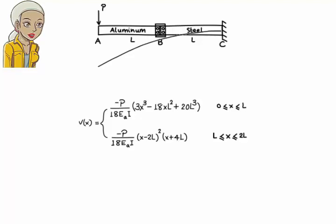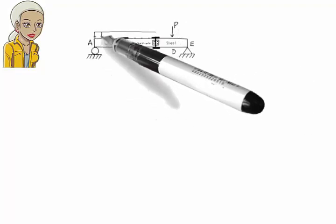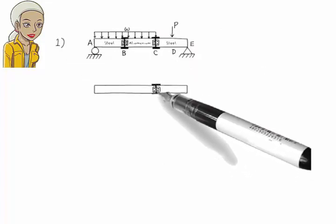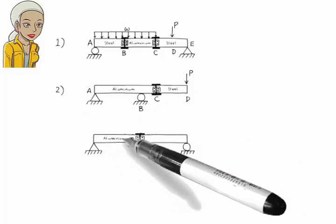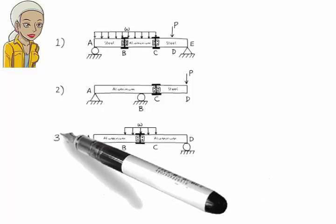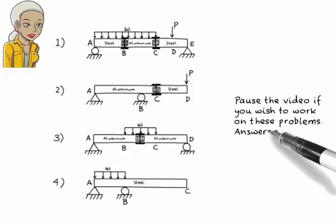To summarize, assuming you already know how to formulate moment equations algebraically and how to integrate continuous functions, the double integration method lends itself to: 1. Determining the number of equations needed to correctly model the beam's deflection, and 2. Identifying and using the necessary boundary conditions for determining the integration constants. Let's see if you can correctly determine the needed number of equations and the necessary boundary conditions for these beams.